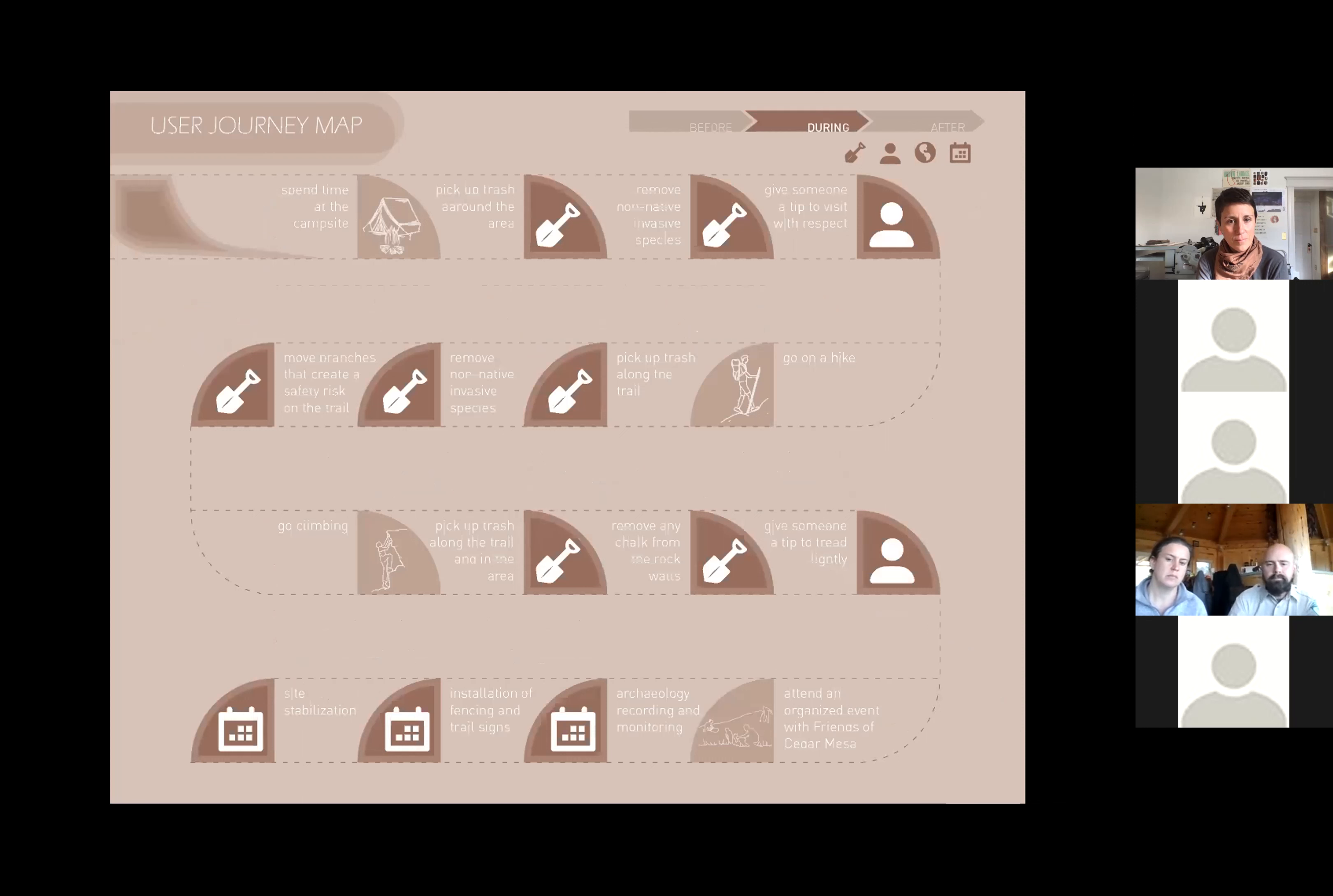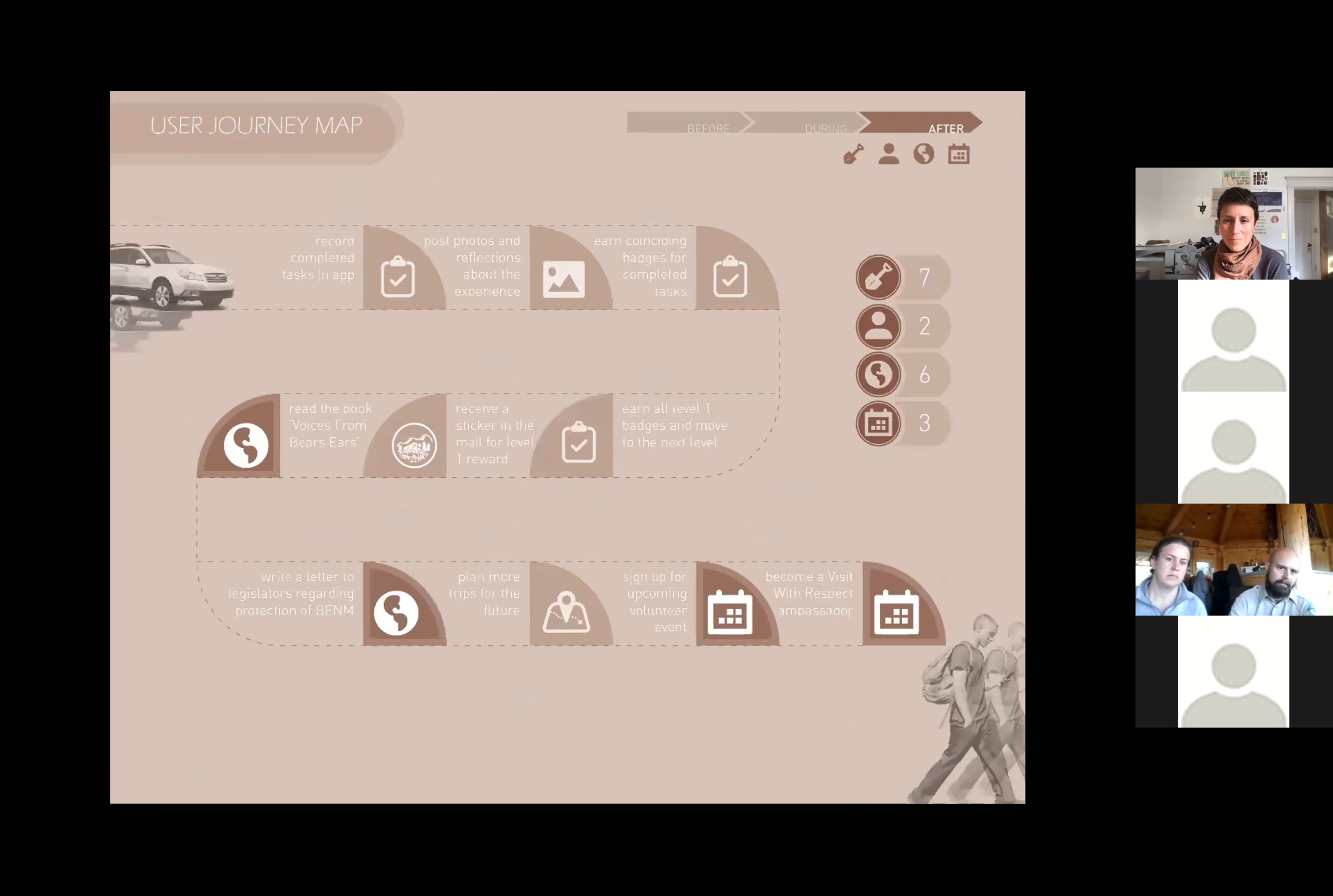The next day, he goes on a hike and completes a few of these tasks along the trail. After that, he goes climbing, where he removes any leftover chalk that he sees on the rock walls and gives another person a tip on how to tread lightly. The next day, he attends an event with Friends of Cedar Mesa, where he helps with archaeology recording and monitoring, site stabilization, and trail maintenance. When he gets back home, he records his completed tasks in the app, posts photos and reflections about the experience, and earns coinciding badges for those tasks.